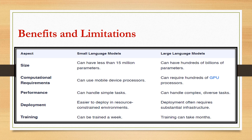SLMs offer the advantage of being trainable with relatively modest datasets, and their simplified architecture enhances interpretability. Their compact size facilitates deployment on mobile devices. A notable benefit is their capability to process data locally, making them valuable for IoT devices and enterprises bound by stringent privacy and security regulations. However, deploying SLMs involves a trade-off: due to training on smaller datasets, they have a more constrained knowledge base compared to large language models.